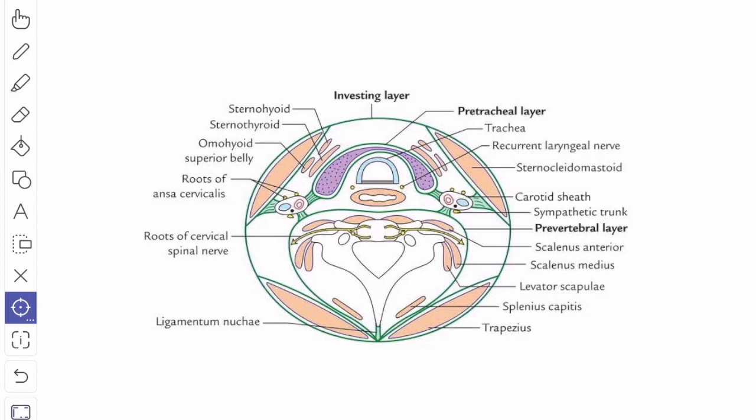The anterior layer is thick whereas the posterior layer which covers the thyroid gland is very thin. Hence, any swelling of the thyroid gland tends to enlarge posteriorly and causes compression of the esophagus producing dysphagia.